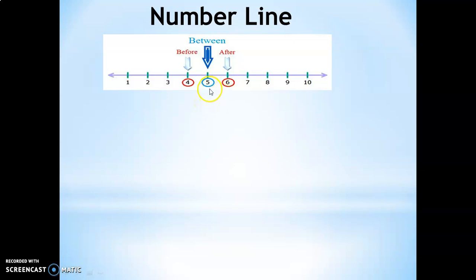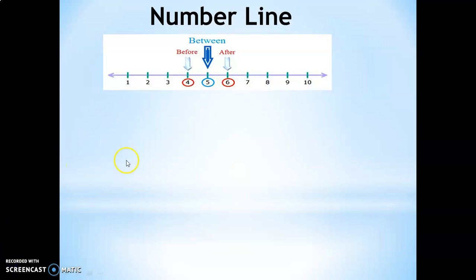Here is number 5. What is the number which comes before 5? It is 4. And what is the number which comes after 5? It is number 6. What is the number which comes between 4 and 6? It is number 5.